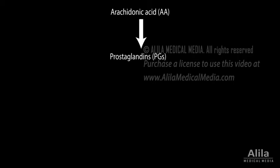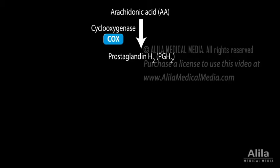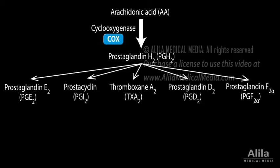Prostaglandins are synthesized from arachidonic acid by the action of cyclooxygenase COX enzymes. COX metabolizes arachidonic acid to prostaglandin H2 (PGH2), which is then converted to different isoforms in different tissues, where they fulfill different functions.